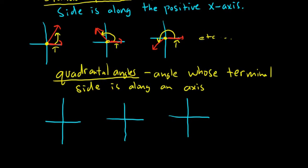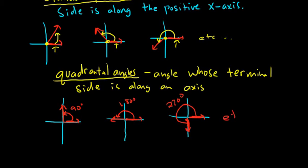Let's draw some quadrantal angles. Here's the terminal side along an axis, and here's our initial side — this would be a right angle, 90 degrees. Here's another one: there's our terminal side and here's our angle — that's a straight angle. And then here's another quadrantal angle, 270 degrees. You can keep drawing more forever.